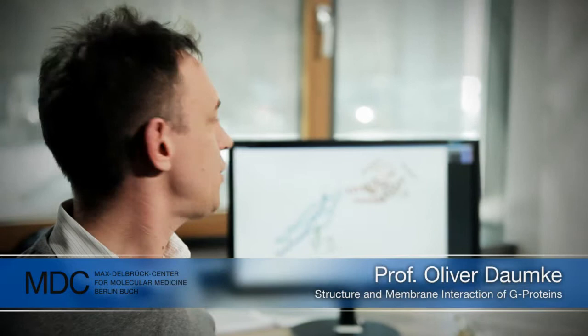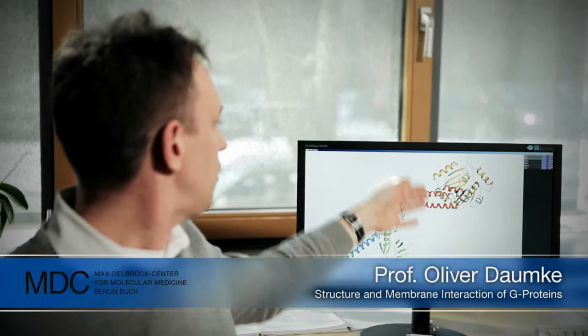We could show that dynamin has a four domain structure, one in yellow, red, blue and green.